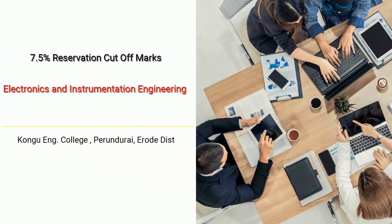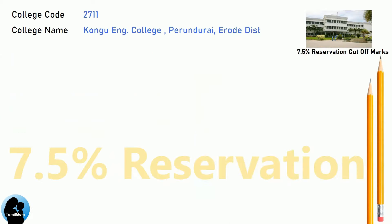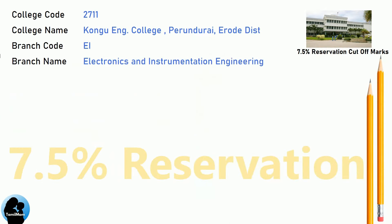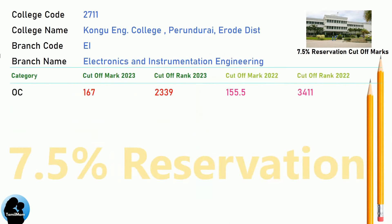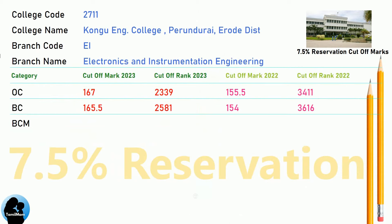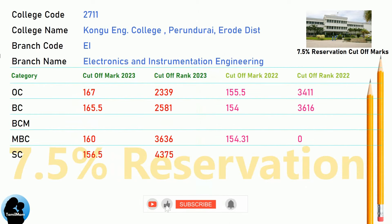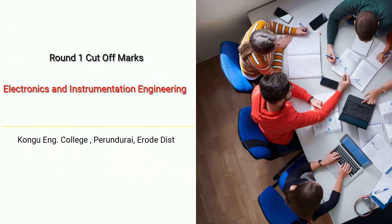BNA 7.5 Reservation Cut-Off for Kongu Engineering College in Electronics and Instrumentation Engineering. BNA 8.5 Reservation Cut-Off for Kongu Engineering College in Electronics and Instrumentation Engineering.